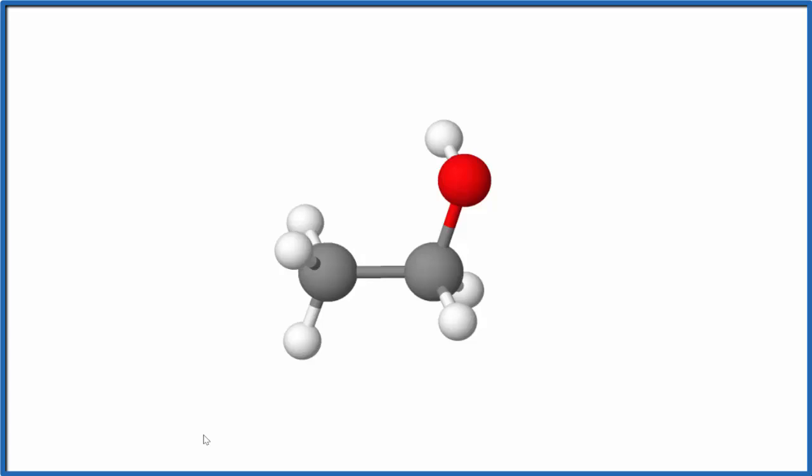So you can see that for each carbon, we have a tetrahedral molecular geometry. And in this OH group up here, that's our alcohol. That's what makes this an alcohol.